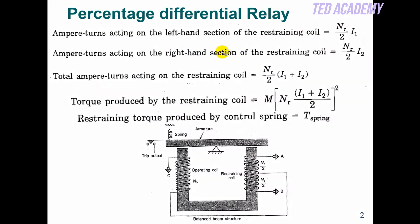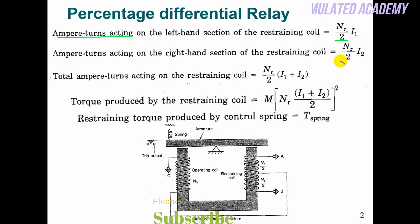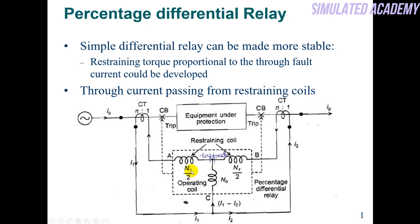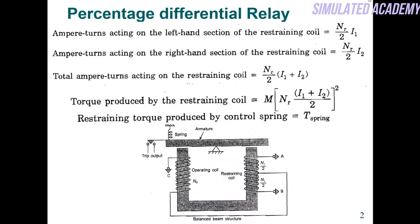On the left side, the turns ratio I mentioned is Nr/2, so the MMF acting will be Nr/2 into I1, and on the right side that acting will be Nr/2 into I2. The total impaired MMF — the total turns ratio — is Nr/2 into I1 plus I2, just add these two. After this, the torque is proportional to the current, so Nr(I1 + I2)/2, whole squared, and M represents the constant of proportionality, and T_spring accounts for the spring effect.